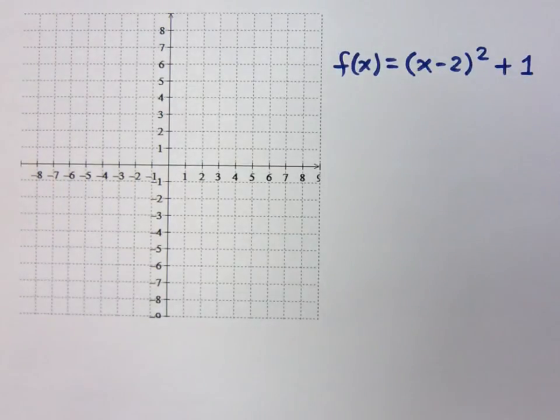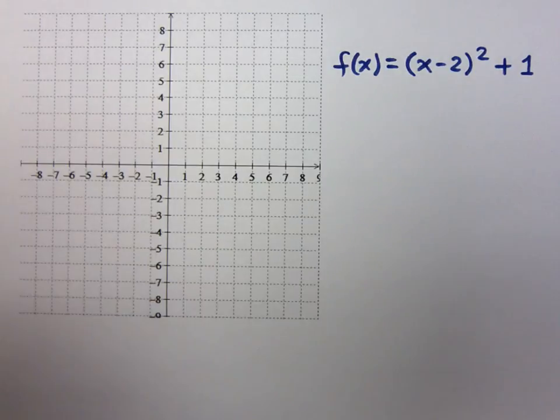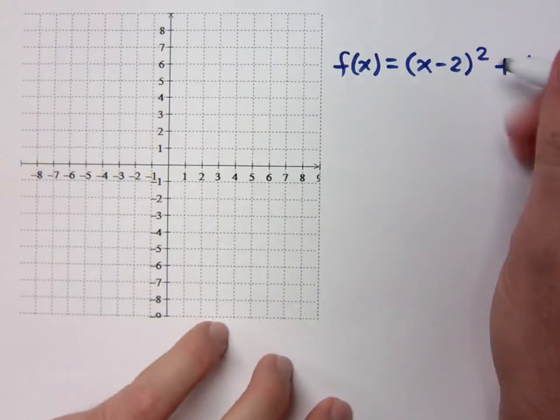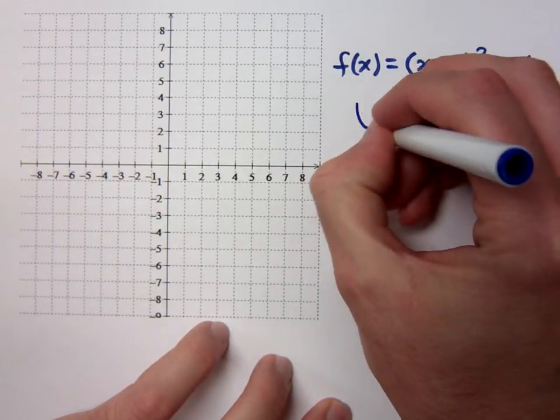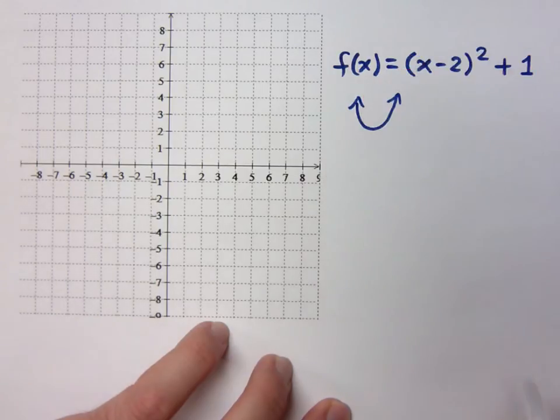Now let's look at putting these graphing techniques together. I've got this function right here, the quantity of x minus 2 squared plus 1. Who is the main function? Who's in charge here? And don't say Tony Danza. He's not the boss. It's the square. This square tells me that my shape looks like a parabola.